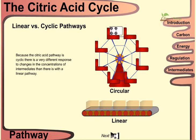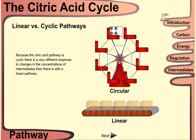There are pathway differences between linear and cyclic pathways. Because the citric acid cycle pathway is cyclic, there is a very different response to changes in the concentration of intermediates compared to a linear pathway.